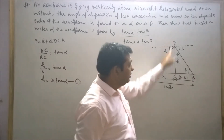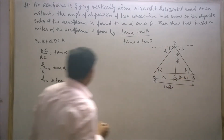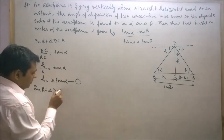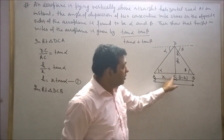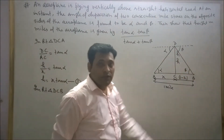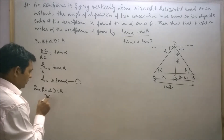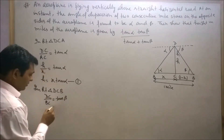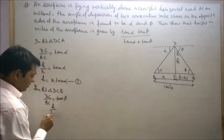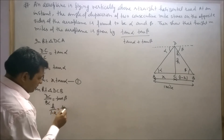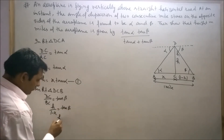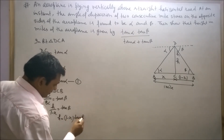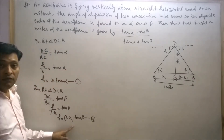Now consider right triangle DCB. In right triangle DCB, DC upon BC is equal to tan beta. DC is H and BC is 1 minus X. Therefore, H upon 1 minus X equals tan beta, so H is equal to 1 minus X into tan beta. Let's say this is our second equation.